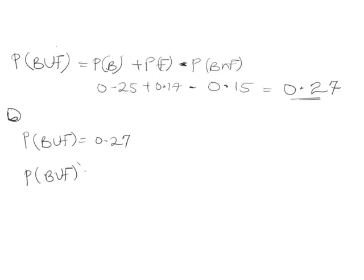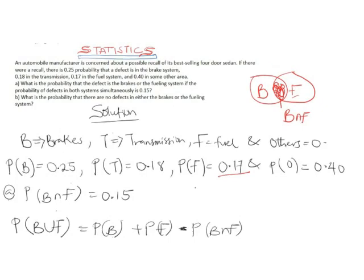The complement means everything within the total probability excluding P(B ∪ F). Since total probability equals 1 and every probability falls in the range 0 to 1, the answer is simply 1 minus 0.27, which equals 0.73. That completes both parts (a) and (b) of the question. If you have any doubts, questions, or comments, we're waiting for you in the comment section — thank you very much, see you in the next video.